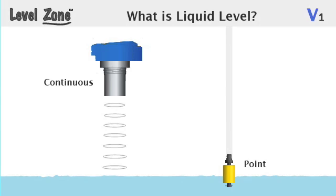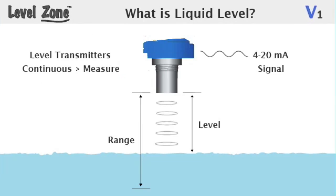There are two basic types of liquid level sensors: continuous and point. Continuous sensors measure level within a specified range and provide a 4-20 milliamp signal output that is proportional to the measured level. These sensors are called level transmitters and are typically used for inventory and process monitoring.